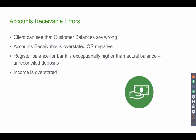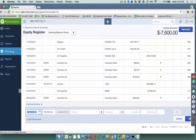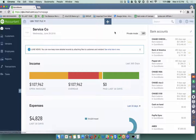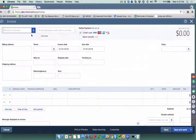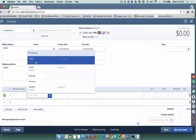Now, Accounts Receivable errors. The most common AR error is somebody will create an invoice and then instead of receiving the payment they will bring the deposit straight into income at the register, which overstates or doubles their accounts receivable. Let me show you an example of that.